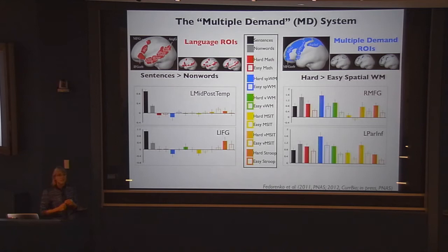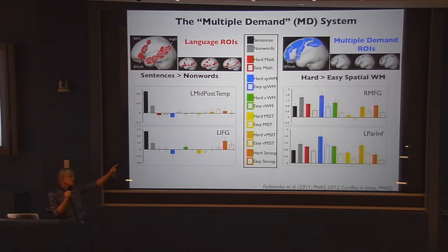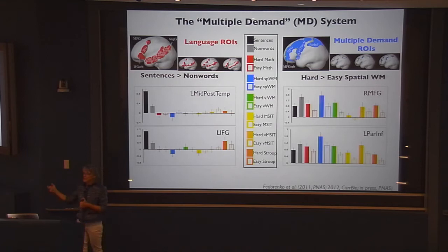As a little sidebar: John Duncan and coworkers have shown with lesion studies that these multiple demand regions are related to IQ. They studied about 80 patients with brain damage and quantified the volume of damage in these regions versus outside them. IQ goes down linearly with loss of those regions and is unaffected by loss in other regions. So if you lose regions for face recognition or language, your IQ doesn't go down — but if you lose these multiple demand regions, your IQ goes down.